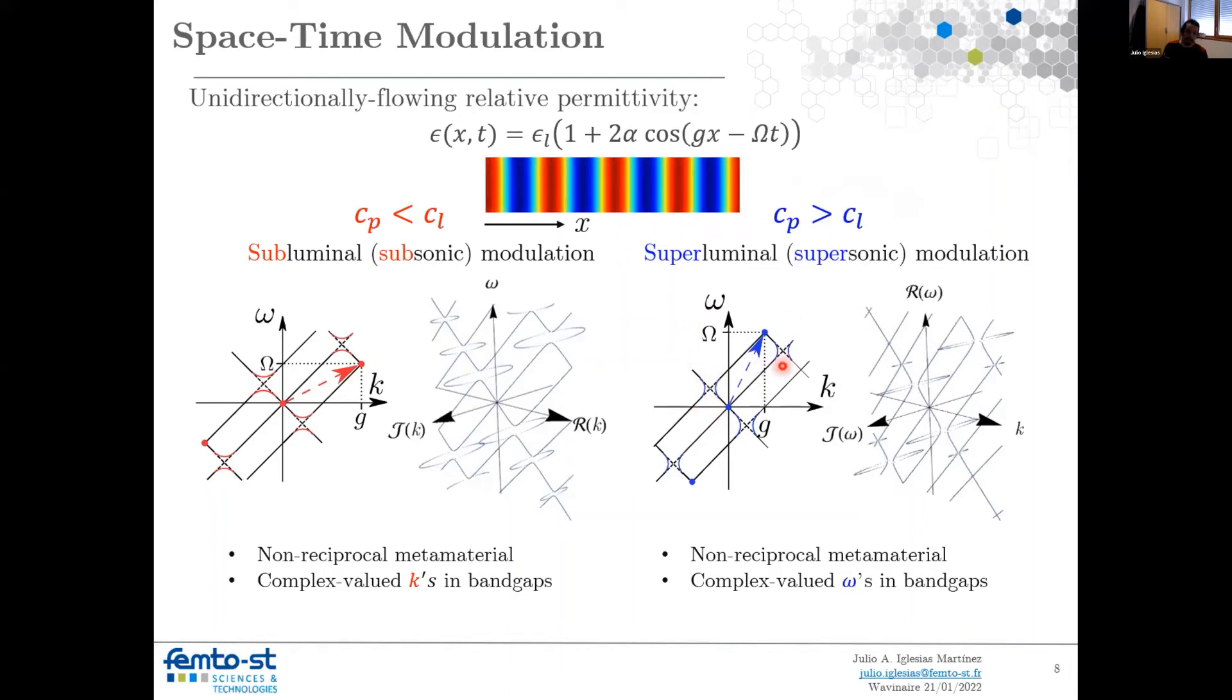Then we have a lot of the properties from the time-only modulation: k gaps, for example, and in these gaps, complex values in omega. But what we can say is the most important property of these two cases is that the symmetry of the band diagram is broken. And this gives us a non-reciprocal metamaterial. What we mean is that the response when you inject a wave from the left to the right is not the same as when you inject a wave from the right to the left. This is true for both cases.